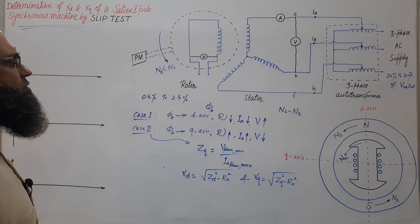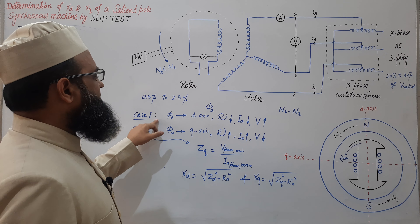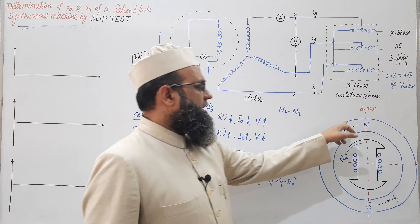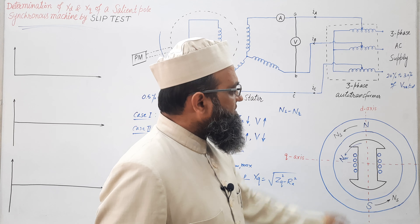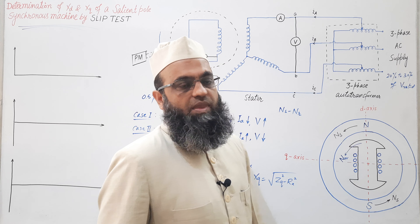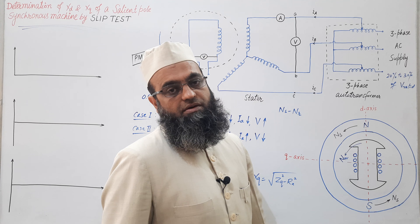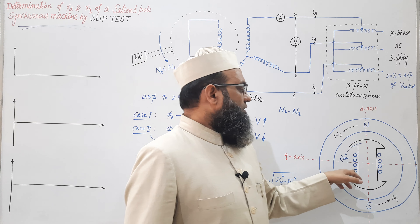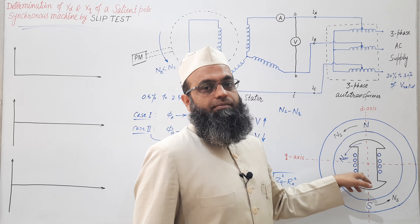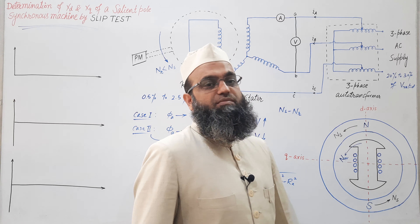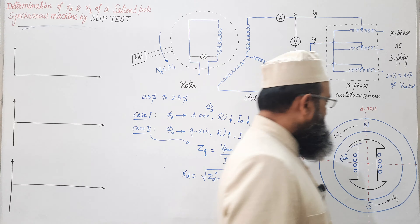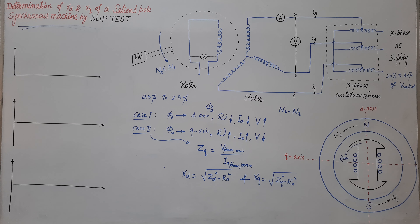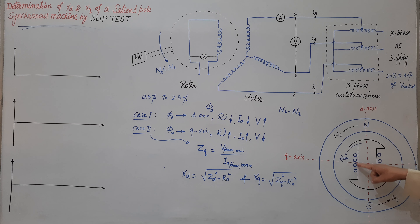We may further observe that for case 1, when the axis of phi-a, that is the rotating magnetic field, aligns with the d-axis, the flux linkage to the rotor field winding is maximum. But the flux cut by the field winding conductors is 0 at this moment.